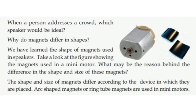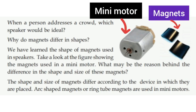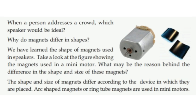When a person addresses a crowd, which speaker would be ideal? The shape of the magnet differs. We have learned the shape of magnets used in speakers. Take a look at the figure showing the magnets used in a mini motor. The shape and size of magnets differ according to the device in which they are placed. Arc-shaped magnets or ring-tube magnets are used in mini motors.